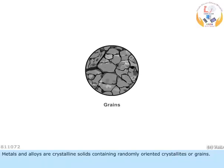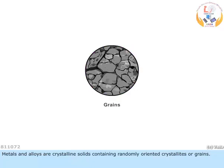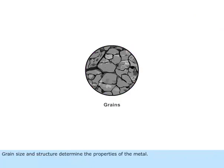Metals and alloys are crystalline solids containing randomly oriented crystallites or grains. Grain size and structure determine the properties of the metal.